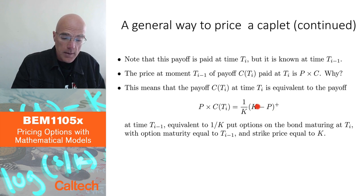And, therefore, pricing a caplet, which is paid at Ti, is the same as pricing 1 over K put options paid at Ti minus 1. So, it's equivalent to 1 over K put options on the bond maturing at Ti, but the option maturity, the put option maturity, is equal to Ti minus 1. And the strike price is equal to K. So, if you have a model in which you know how to price put options on bonds, then you can price a caplet, the corresponding caplet.